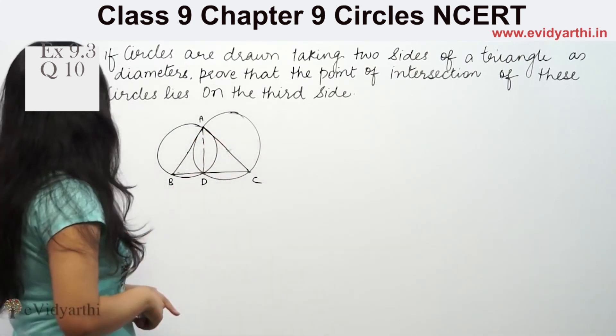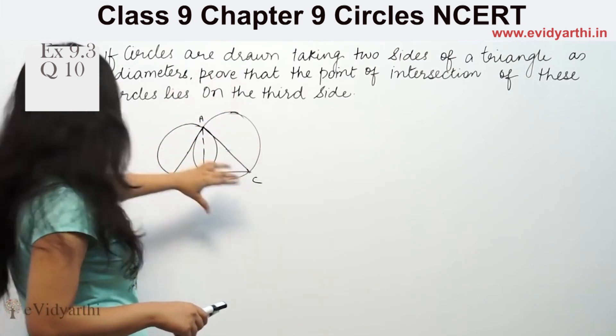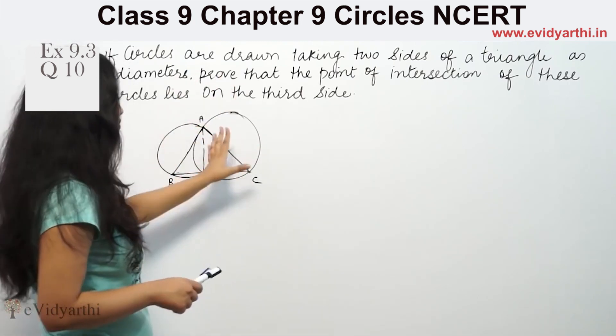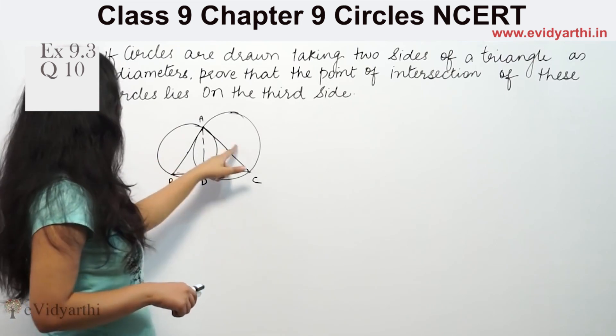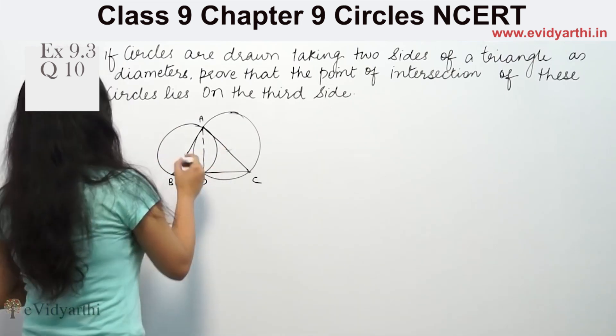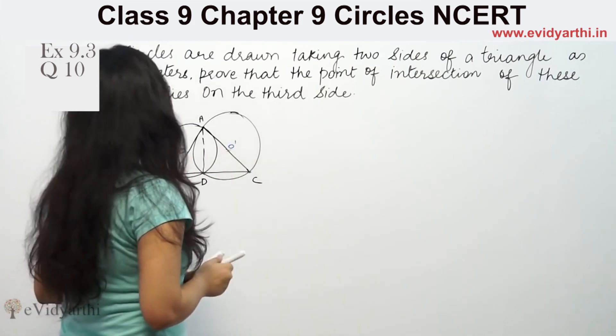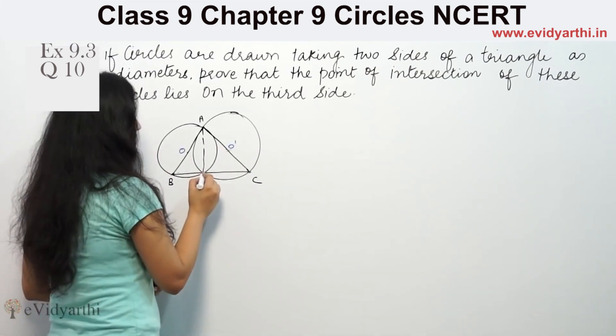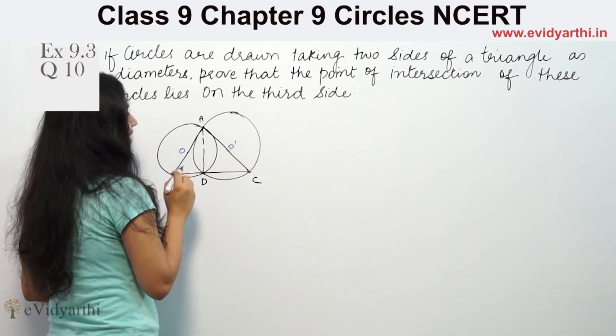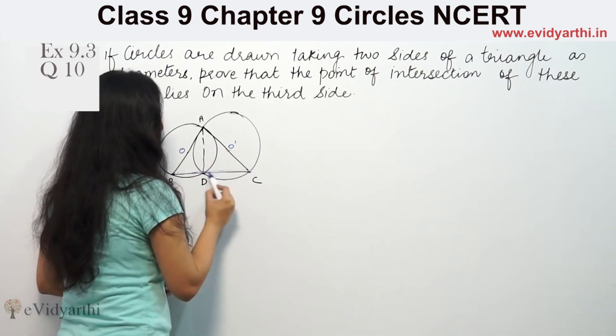This shows that in two circles they are the diameter of two sides of the triangle. This is O and this is O prime. The point of intersection of these circles, which is the point D, lies on the third side BC.